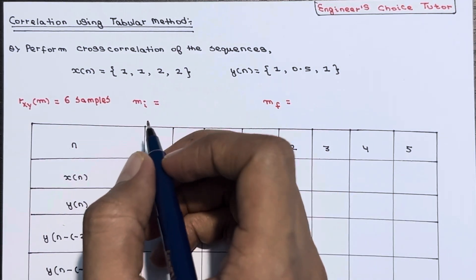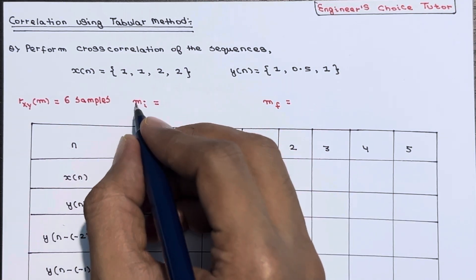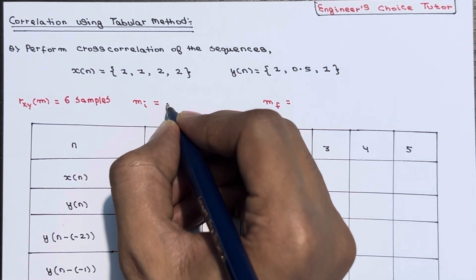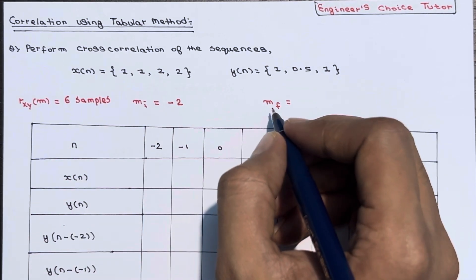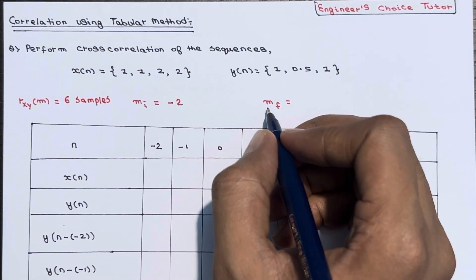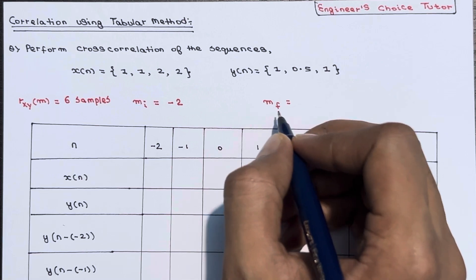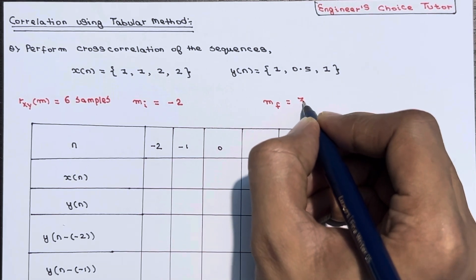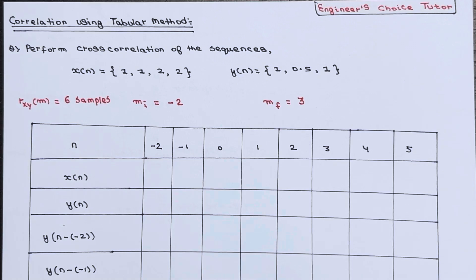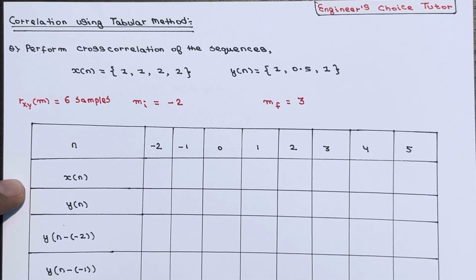The initial value of m, denoted as m_i, is equal to minus two, and the final value of m, denoted as m_f, is equal to three. We have already calculated this in the last lecture. So now let's plot a table and see how to do this.